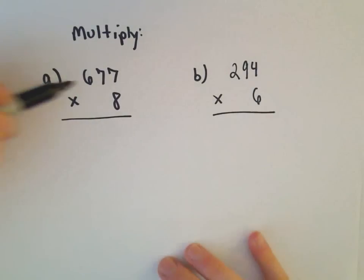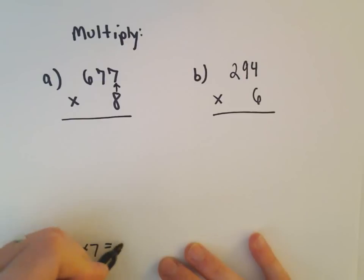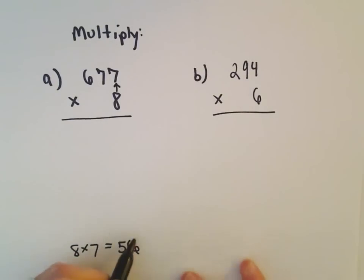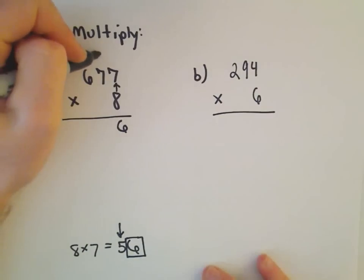So in part A here, we have 677 multiplied by 8. So the first thing I'm going to do is 8 times 7. Well, 8 times 7 is going to give us 56. And we just keep the rightmost digit, which is going to be a 6. And then the leftmost digit, that's what we carry to the next column. So I'm going to put a 5 there.